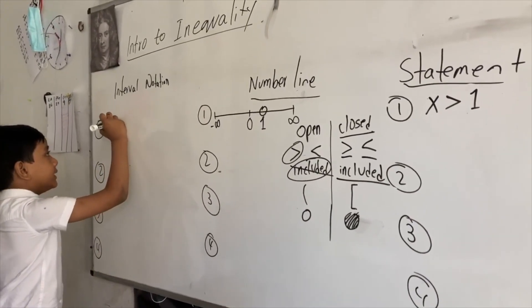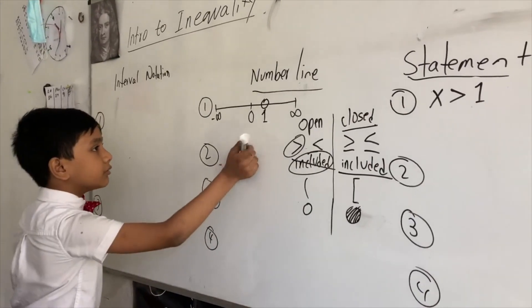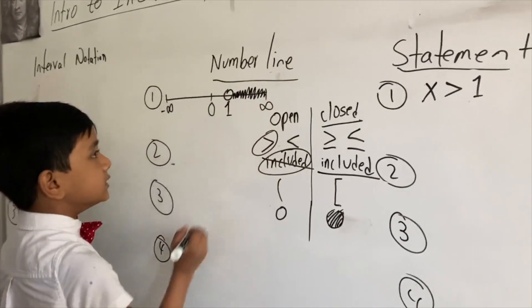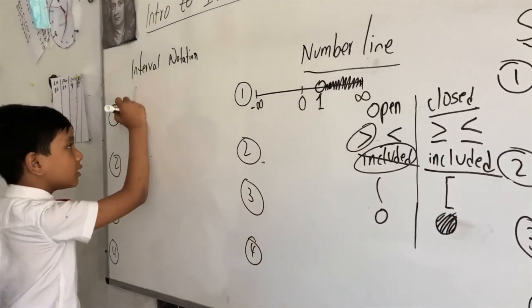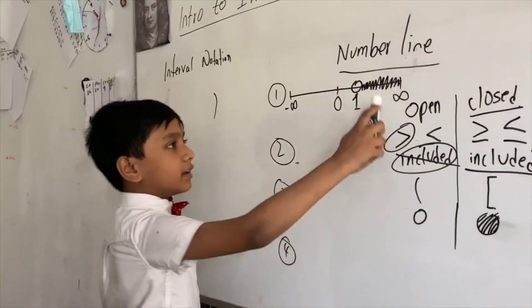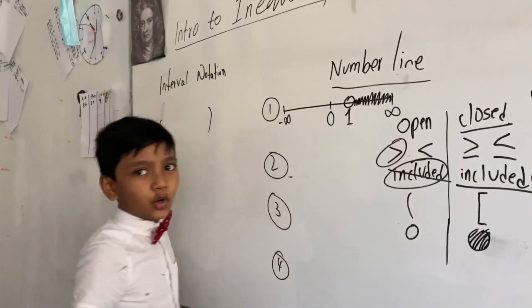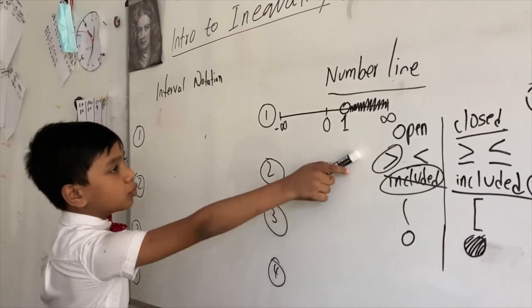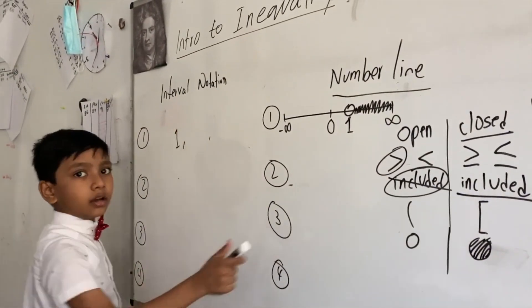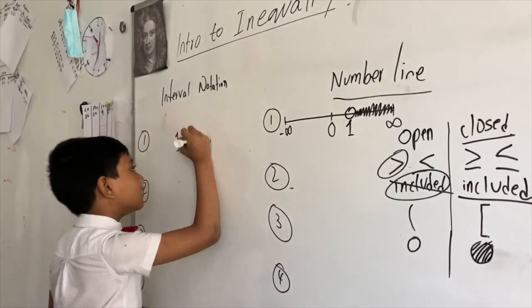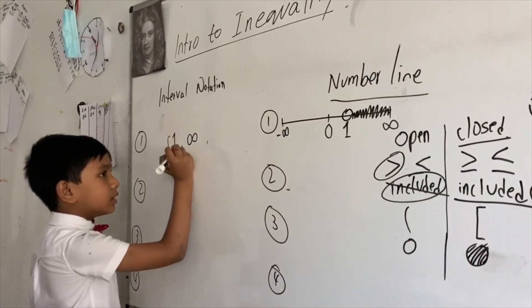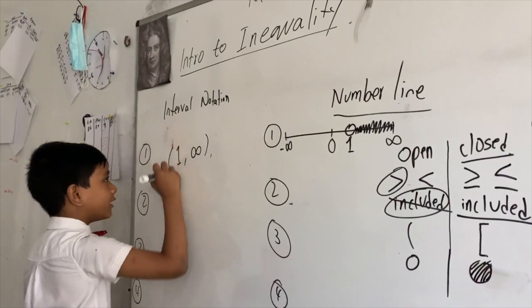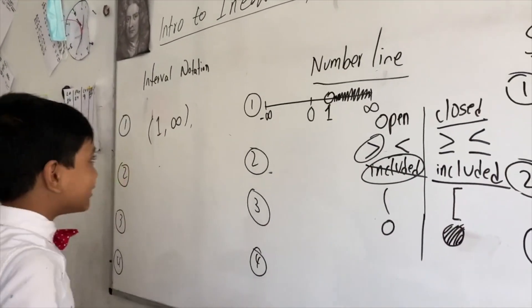Since x strictly cannot include 1, x lies somewhere in this range — greater than 1. So we can write the interval notation, which would be one comma infinity, meaning one to infinity. Since this is not a closed circle, we write it with parentheses — not in square brackets.